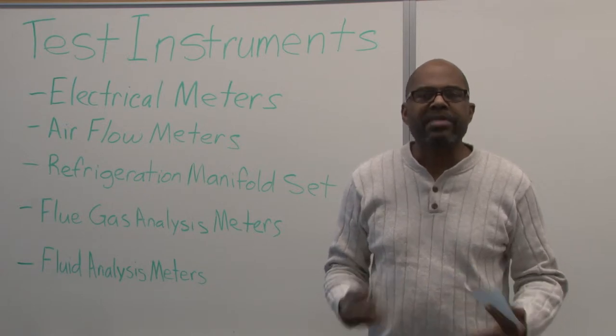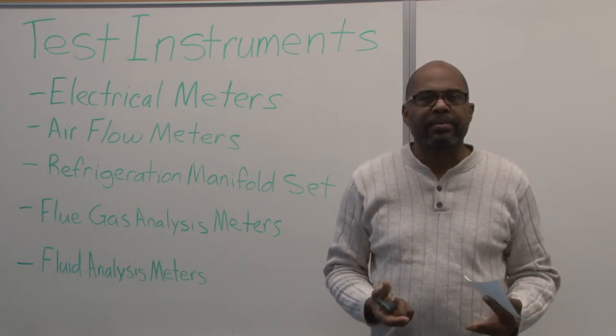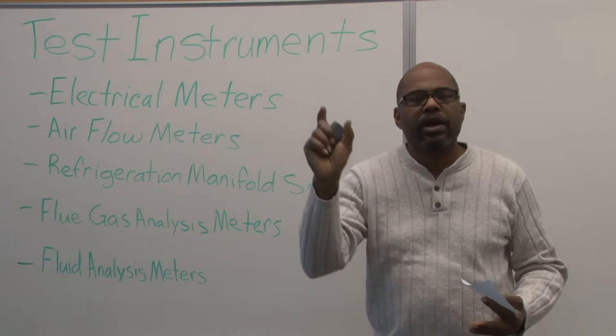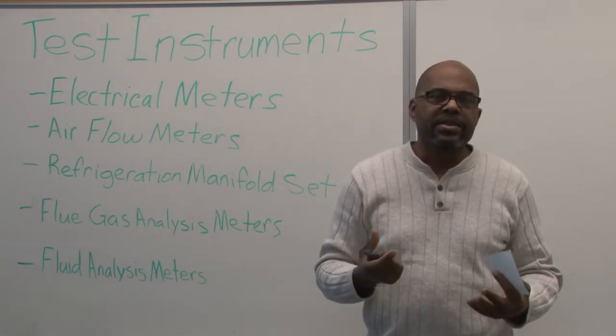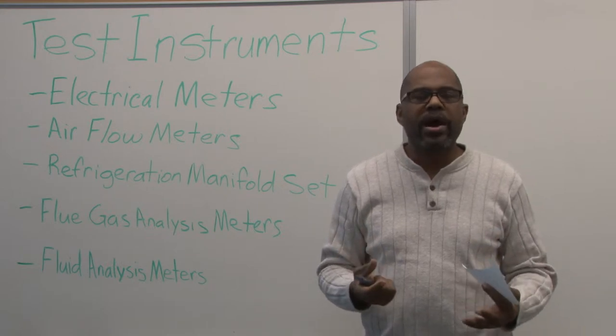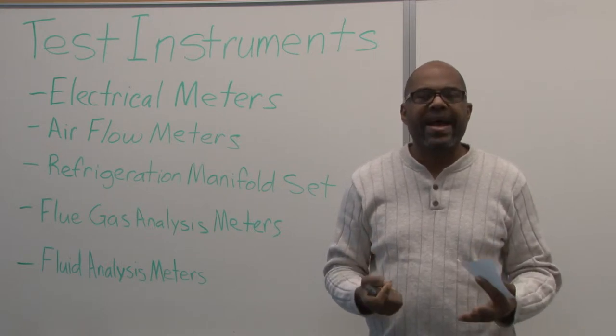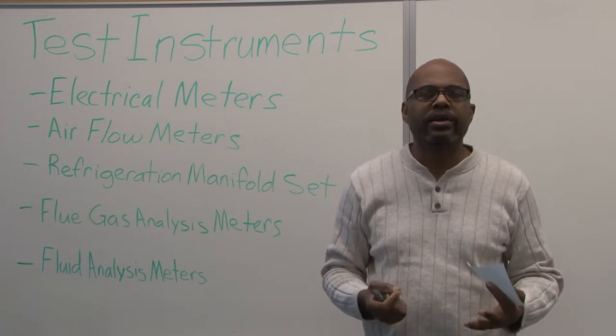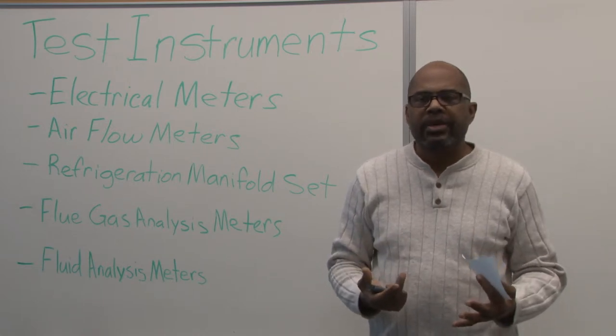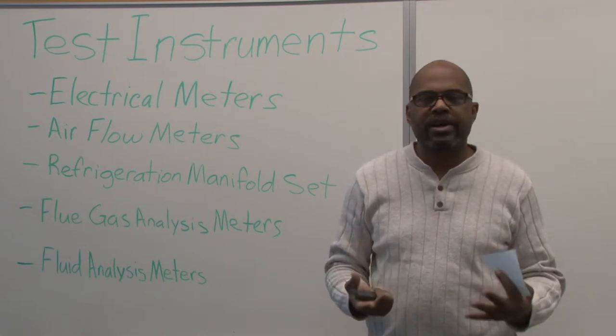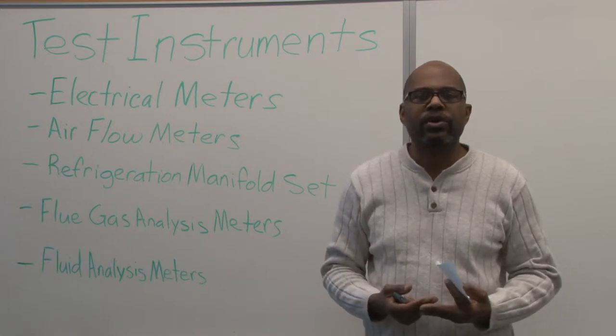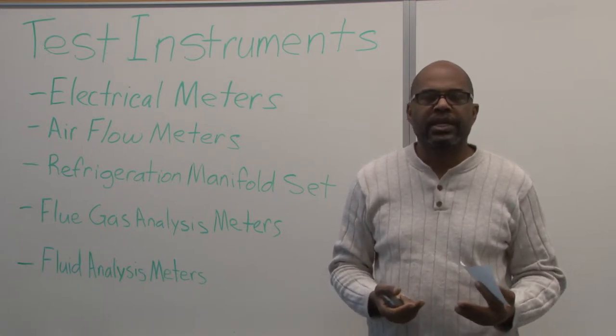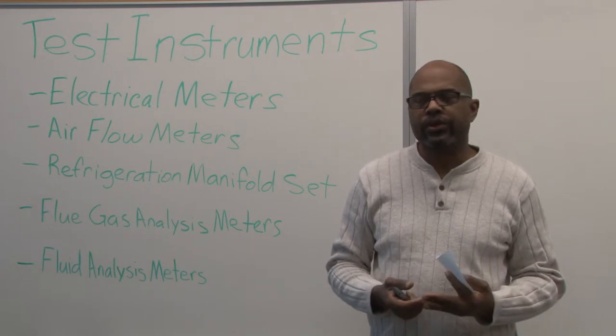A lot of times we have a separate ampmeter, a clamp-on type, that will actually clamp around the wire and it will read the current through a wire more efficiently, faster, without disconnecting the wire, and it is safer that way. So a clamp-on-amp meter is a separate type of meter we can have even though we do have multi-testers that can read amperage also.